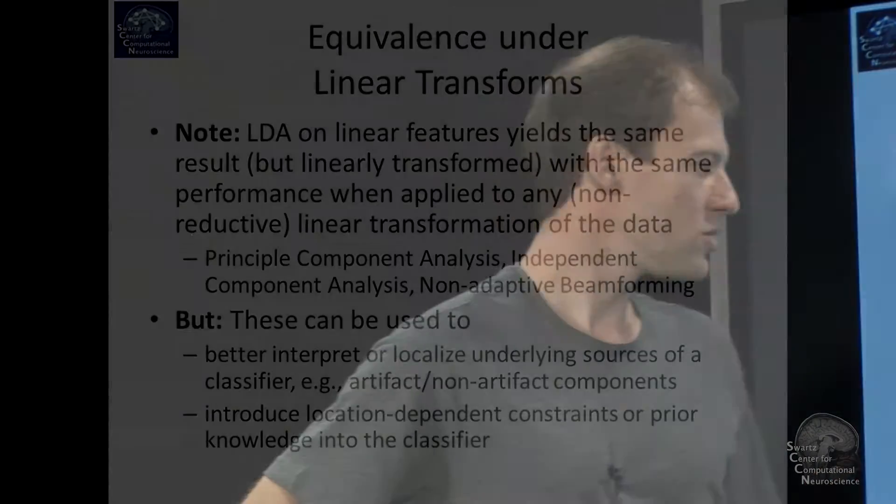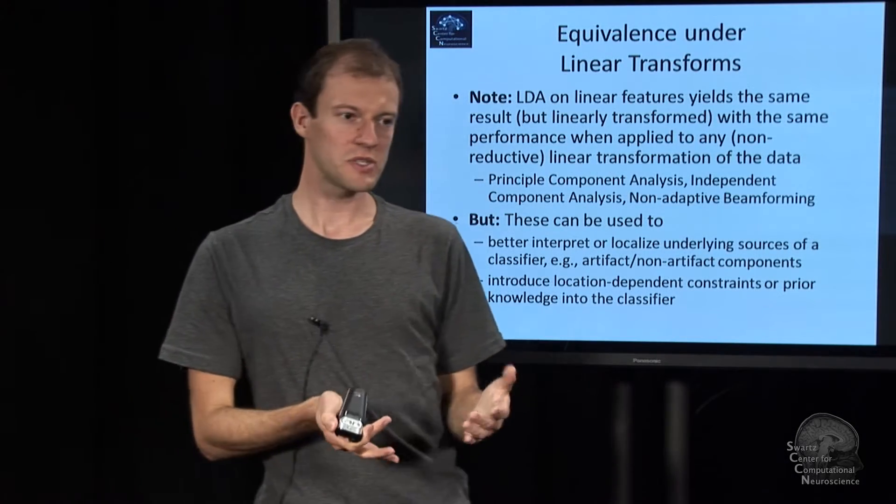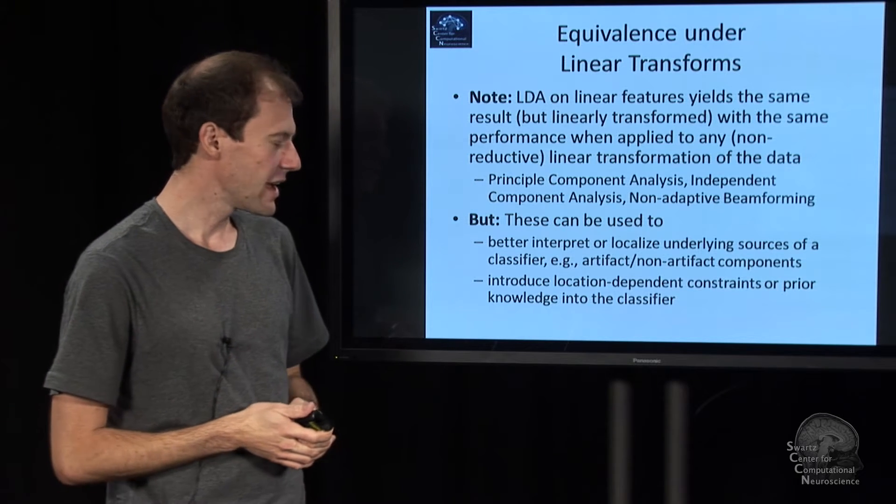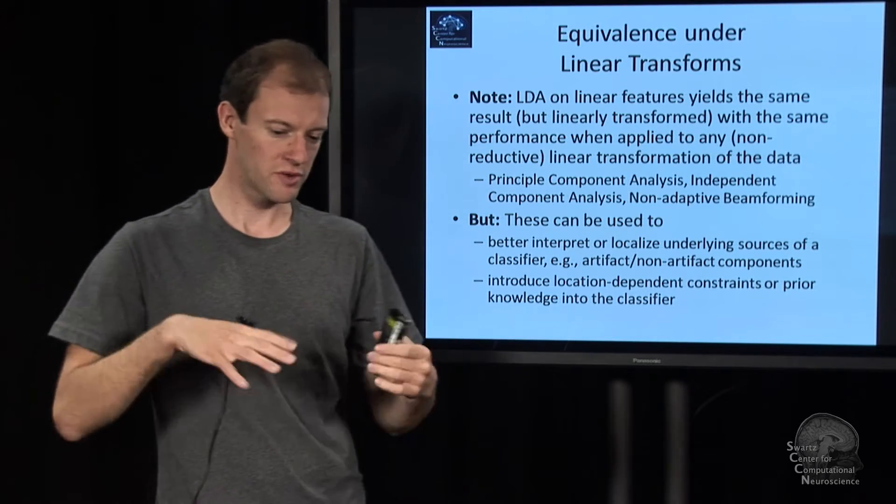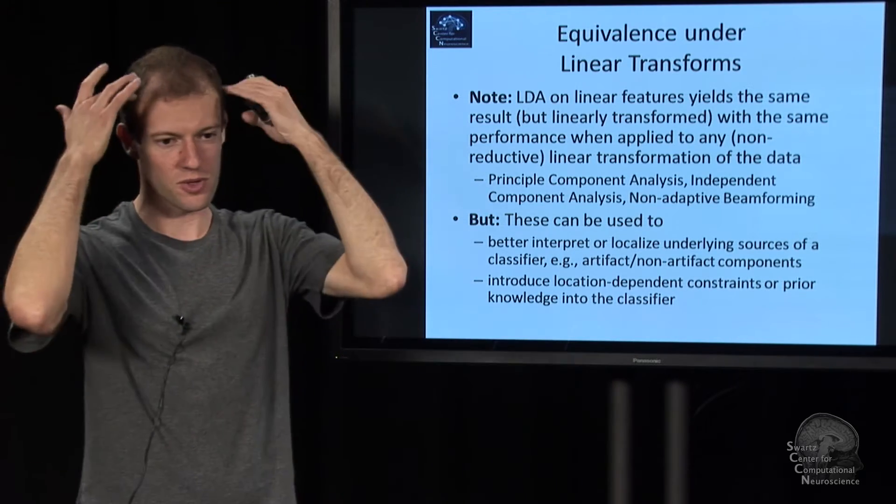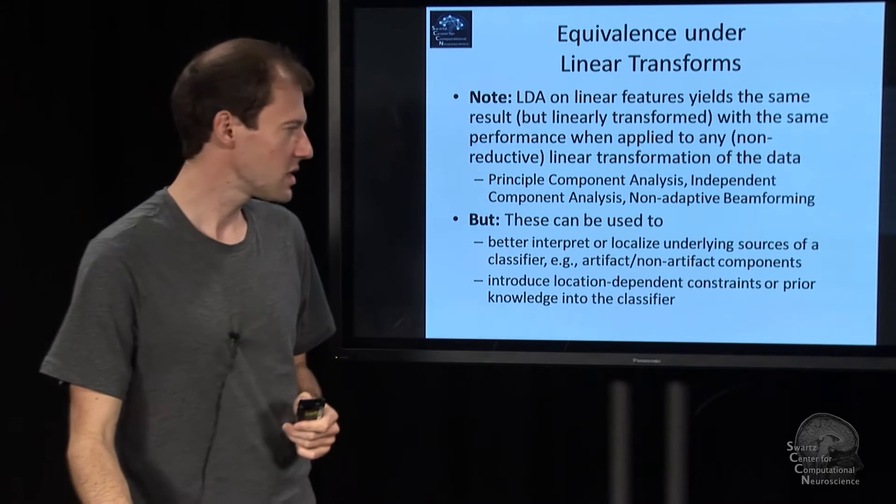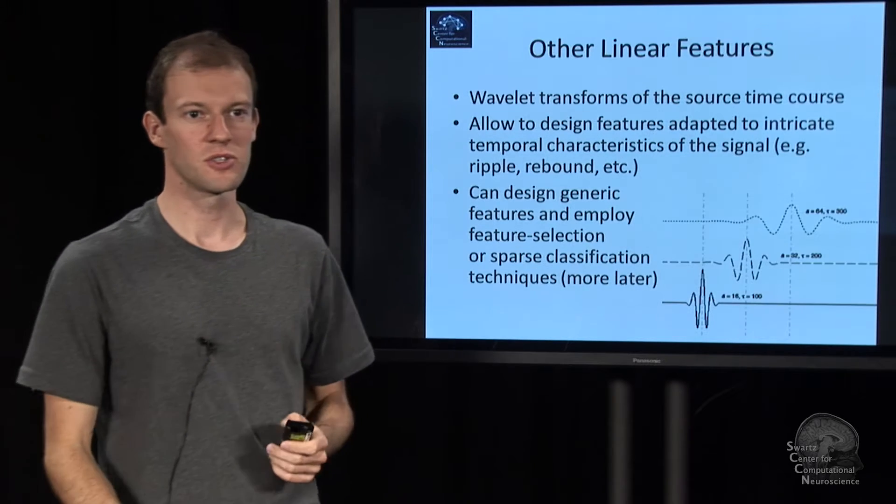And so you can suddenly interpret these classifiers relatively easily. And furthermore, you can basically introduce extra constraints that are informed by where these components sit in the brain. So ICA is a very strong method to give you something that relates to source space. I'll say a few things in the last lecture on that. You can say, I don't want to use components that don't come from occipital cortex. Because I'm using a visual process, I don't think my signal originates from here. At least not the signal that I want to use. So these things suddenly become possible.